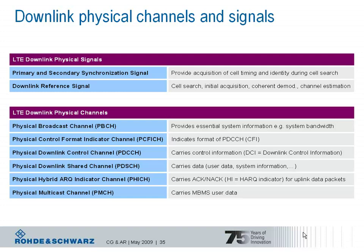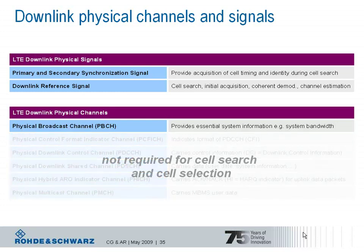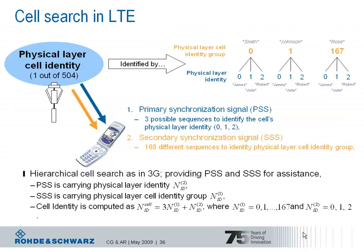Back to the first step after powering up the UE. For cell search and cell selection, just the downlink physical signals and the physical broadcast channel are important. A successful execution of the cell search and selection procedure, as well as acquiring initial system information, is essential for the UE before taking further steps in communicating with the network.